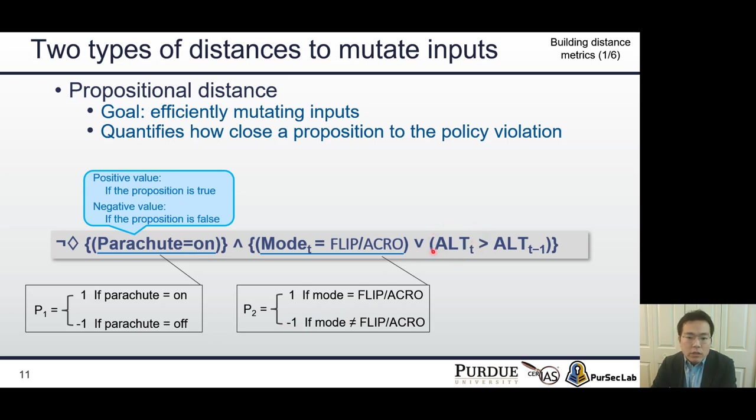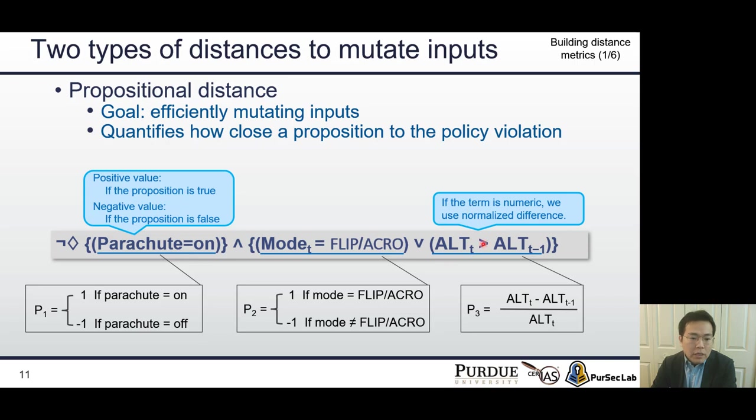However, this altitude is a numeric value, unlike parachute and fly mode. If the term is numeric, we build a propositional distance using normalized difference.